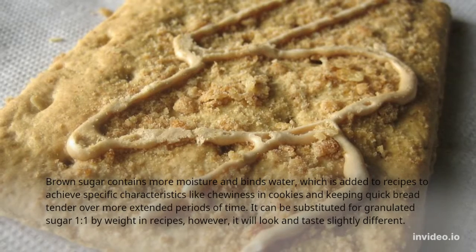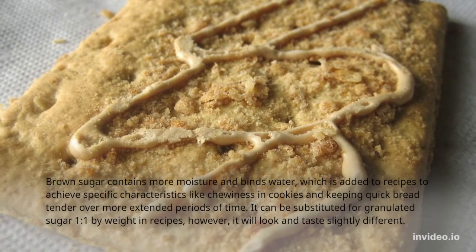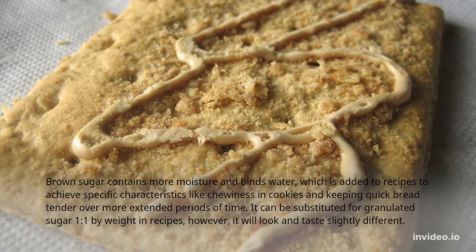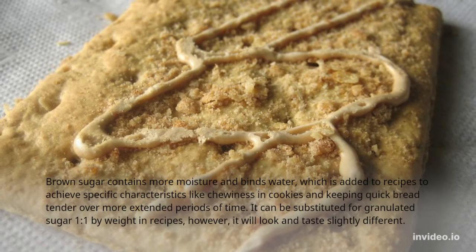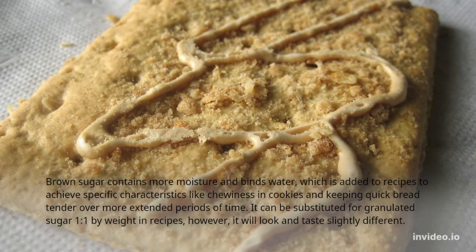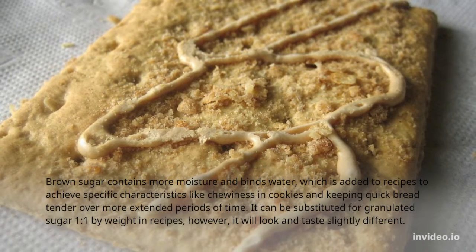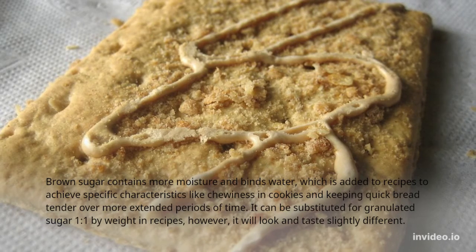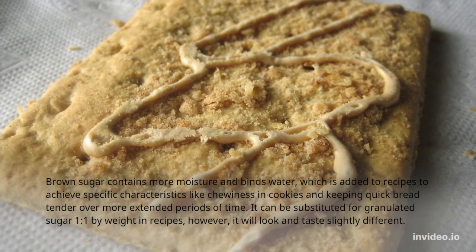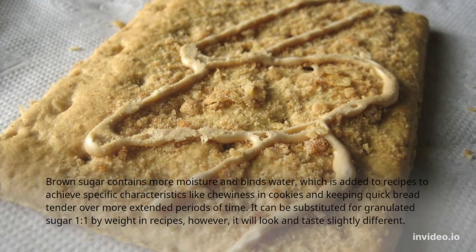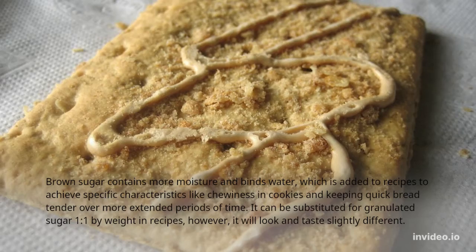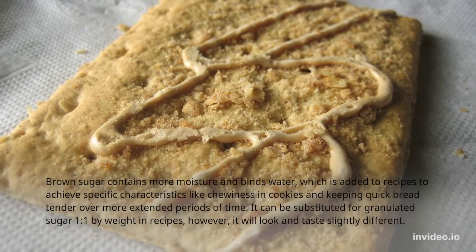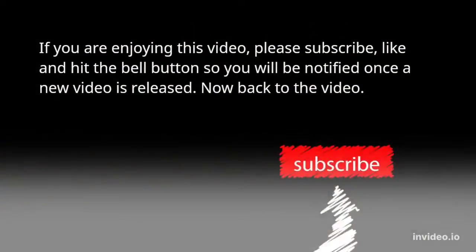Brown sugar contains more moisture and binds water, which is added to recipes to achieve specific characteristics like chewiness in cookies and keeping quick bread tender over more extended periods of time. It can be substituted for granulated sugar 1 to 1 by weight in recipes; however, it will look and taste slightly different.